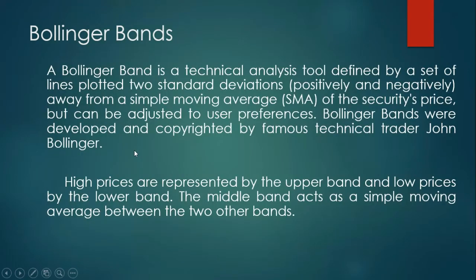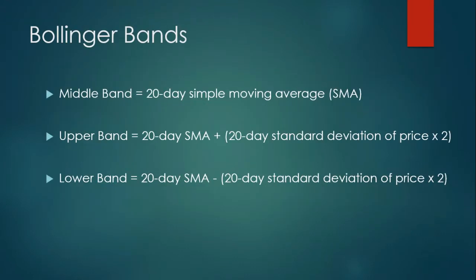That is about the Bollinger Band — how to analyze it and how to trade it. I'll explain through a live example in a few more minutes. The middle band will always be a 20-day simple moving average. It takes the past 20 days of opening and closing prices and forms a graph — that is the simple moving average, as I explained in the moving average lesson.